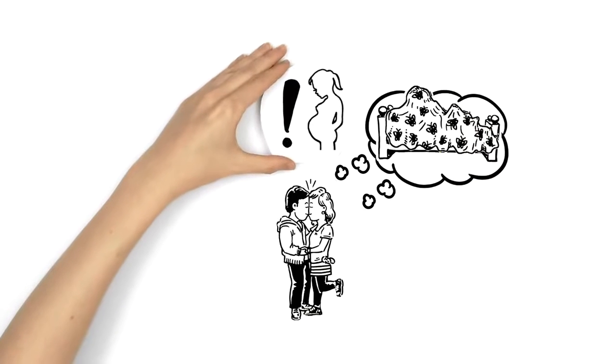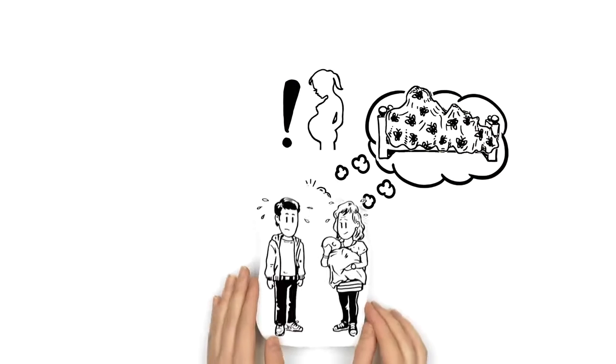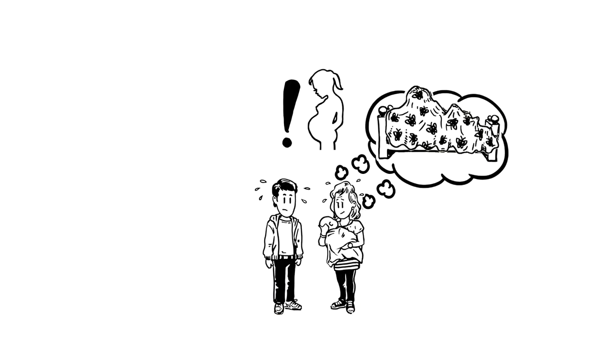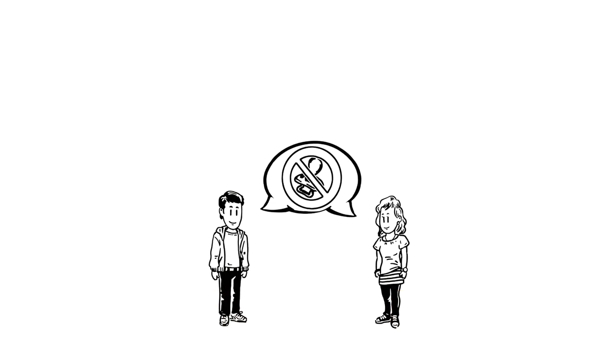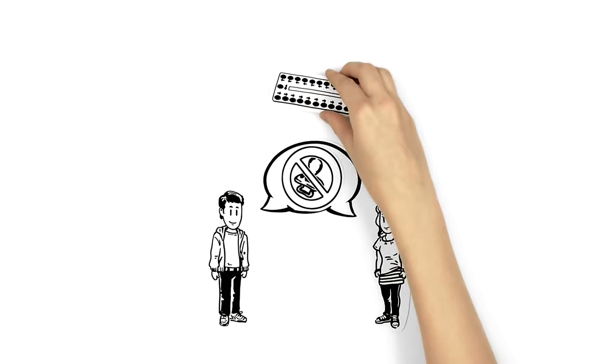Of course they know about the risk of pregnancy, but they consider themselves way too young to have a child. Because of that, talking about contraception before their first time is important.